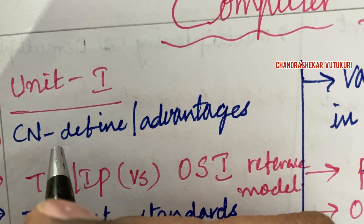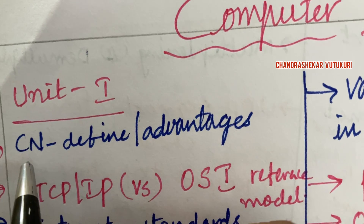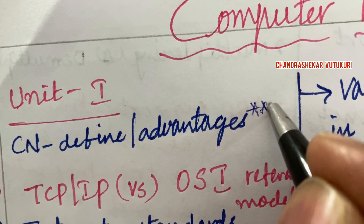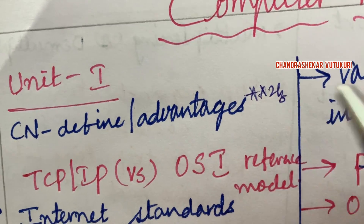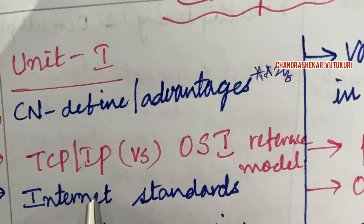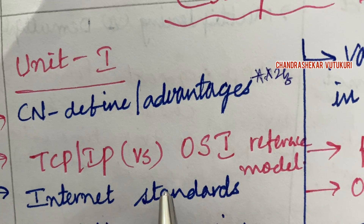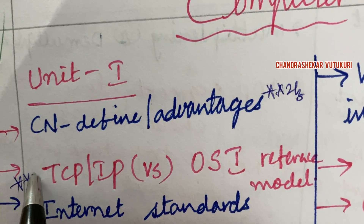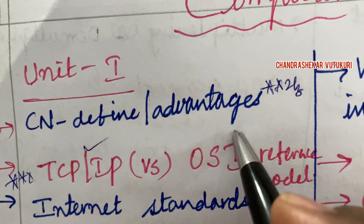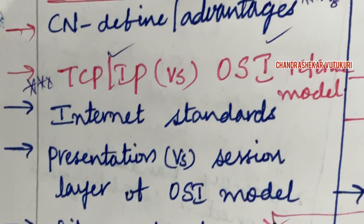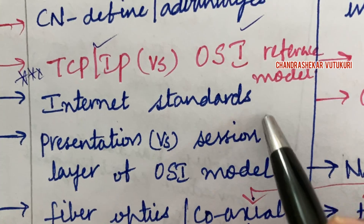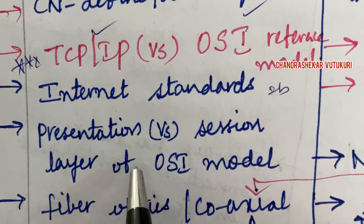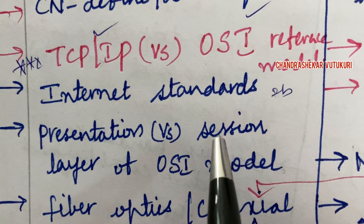The first definition for two-mark and three-mark questions: define Computer Networks along with its advantages — this may be a short question. TCP/IP versus OSI reference model is said to be a topmost question related to this topic — you are going to get this for sure. Internet standards may also be a short question.